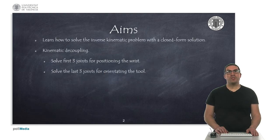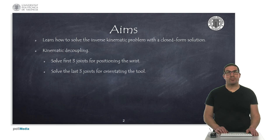The aims of the presentation are to provide a closed form solution to the inverse kinematics problem. Therefore, we will study the case of kinematic decoupling when using spherical wrists. That will allow us to solve the problem as a problem of positioning the wrist with the first three joints and a problem of orientating the tool with the last three joints.